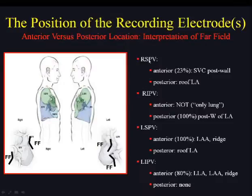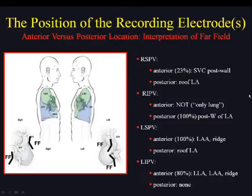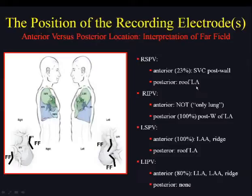For the right superior pulmonary vein, you can pick up far fields from the SVC anteriorly. The right inferior pulmonary vein typically gives far field at the posterior wall from the left atrium, in almost every case. The left superior pulmonary vein will give left atrial appendage or ridge far-field potentials, whereas the left inferior pulmonary vein typically gives far-field potentials from the low lateral atrium, left atrial appendage, or the ridge.